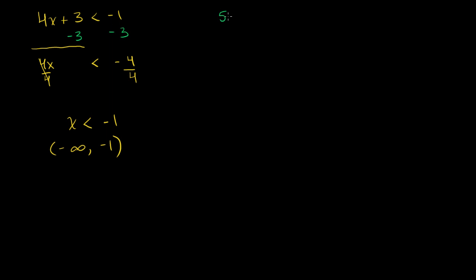Let's say we have 5x is greater than 8x plus 27. Let's get all our x's on the left-hand side. The best way to do that is subtract 8x from both sides. The left-hand side becomes 5x minus 8x, which is negative 3x. We still have a greater than sign — we're just adding or subtracting the same quantity. The 8x's cancel out and you're just left with 27.